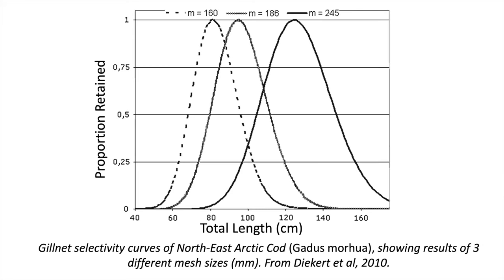This is a typical selection curve for a gillnet fishery. Each mesh size has an optimum size of fish that it catches. Note that for gears based on meshes — so not things like long lines — selectivity should be expressed as fish girth, since that's typically the factor which determines if the fish is trapped or not.